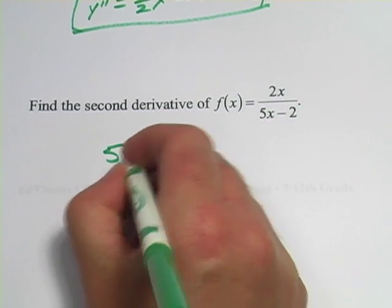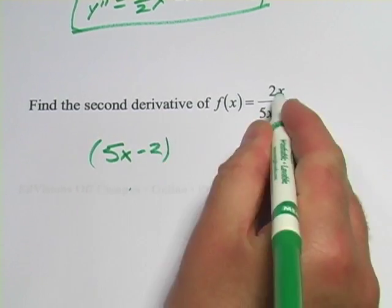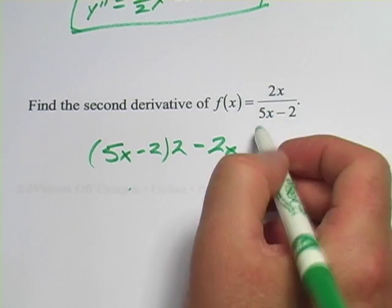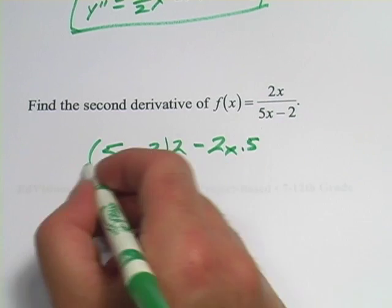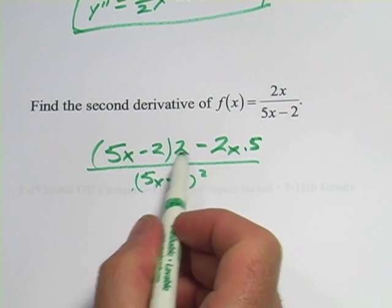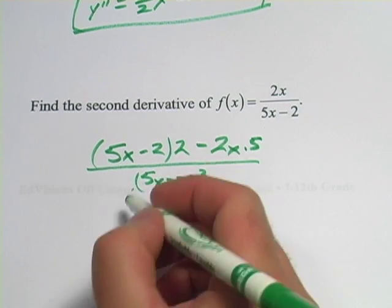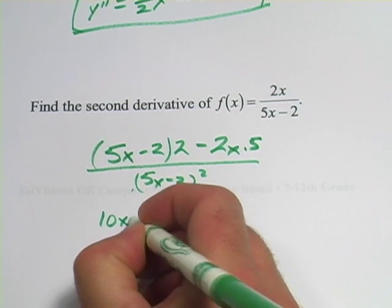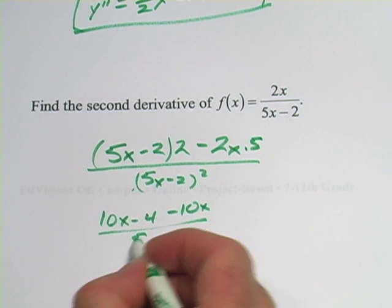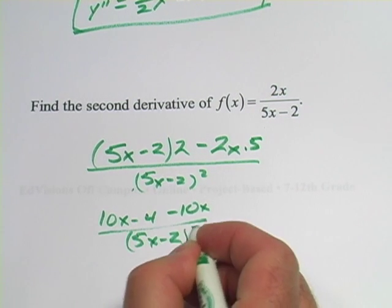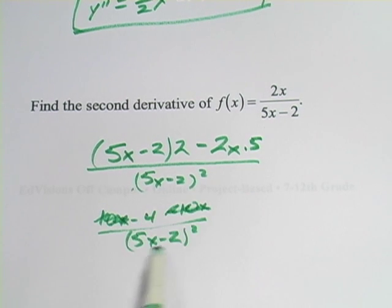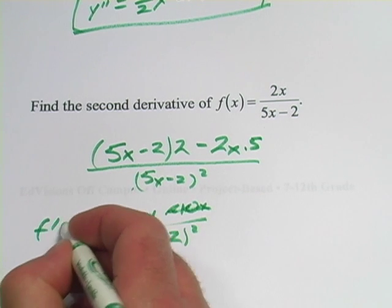So low is 5x minus 2. d high is 2 minus high. And d low, the derivative of the chunk on the bottom here, is just 5. And that's all over low squared, so 5x minus 2 quantity squared. And then let's go ahead and put the 2 through here and see how this simplifies. We would get 10x minus 4, and that's a minus 10x. Aha! So you can see here the 10x's are going to add together to 0, because we've got a 10x and a negative 10x. So this goes away, this goes away, and this is our first derivative. So this is f prime of x.